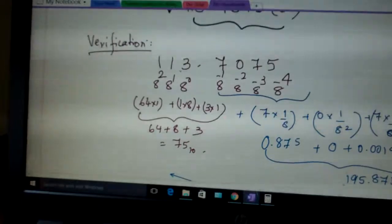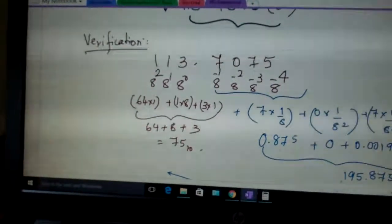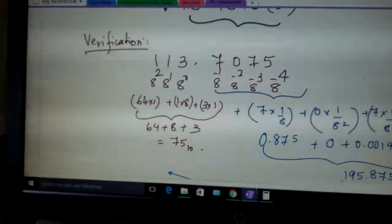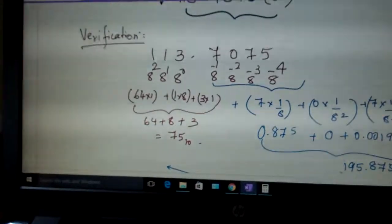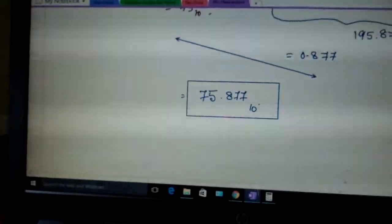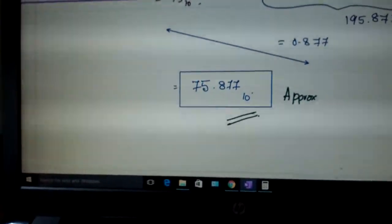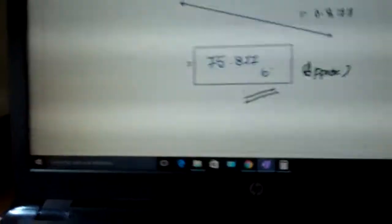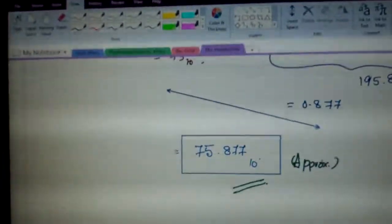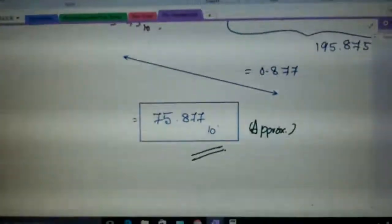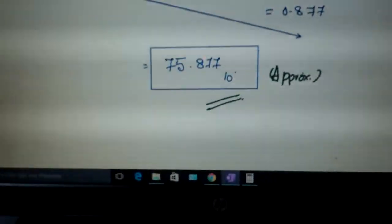And how do you verify once again? This is 8^0, 8^1, 8^2 for the place values and 8^-1, 8^-2, 8^-3 for the fractional part. This gives you the accuracy. So this is how you convert the fractional numbers. Thank you.